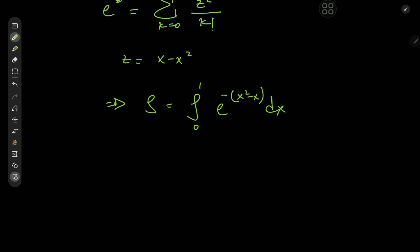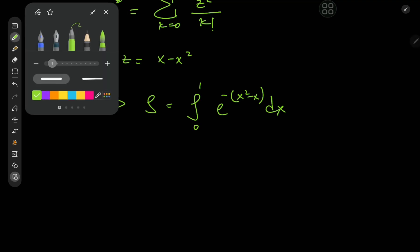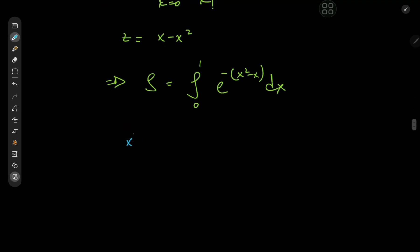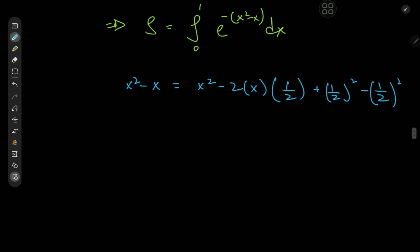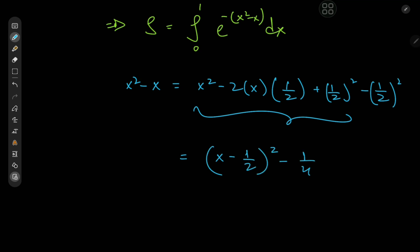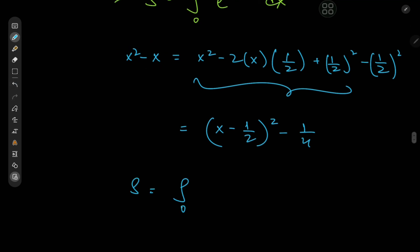Now we have x squared minus x, so we might as well complete the square. Expanding x squared minus x as x squared minus 2 times x times 1 half, we need 1 half squared here and negative of 1 half squared. This whole thing is x minus 1 half squared minus a quarter. So s is the integral from 0 to 1 of e to the negative x minus 1 half squared plus a quarter dx.